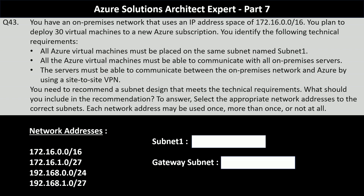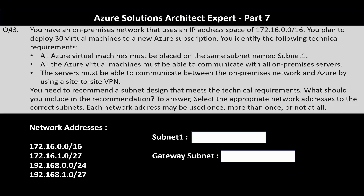To answer, you need to select the appropriate network address to the correct subnets. Each network address may be used once, more than once, or not at all. The network addresses are 172.16.0.0 with a prefix length of 16, 172.16.1.0 with a prefix length of 27, 192.168.0.0 with a prefix length of 24, and 192.168.1.0 with a prefix length of 27.